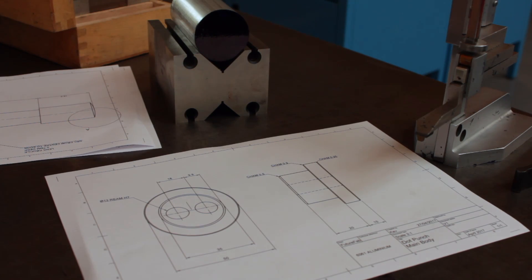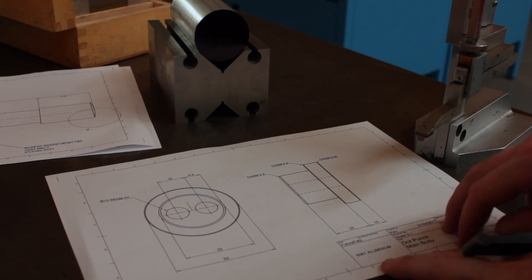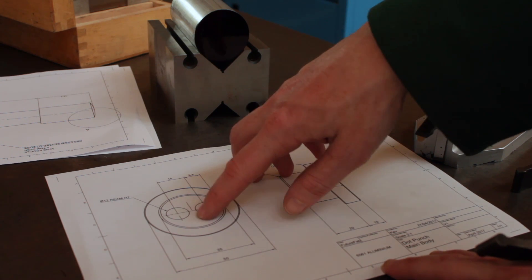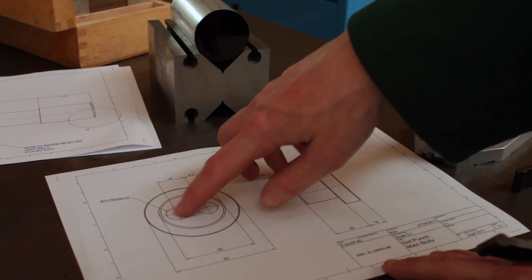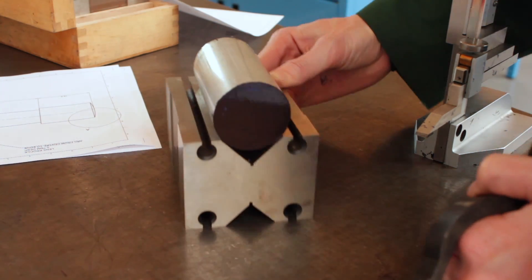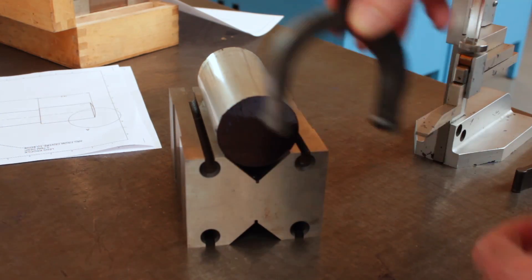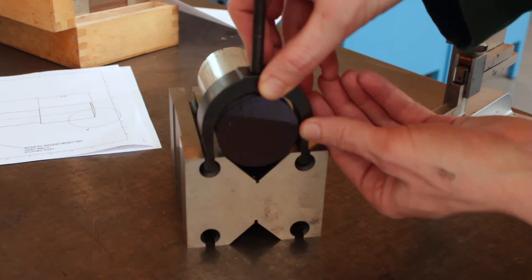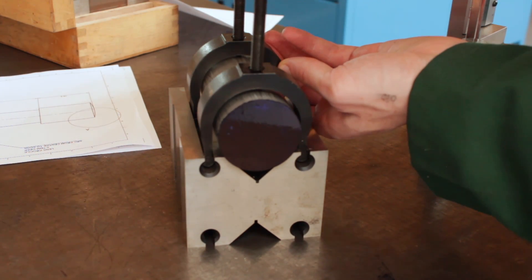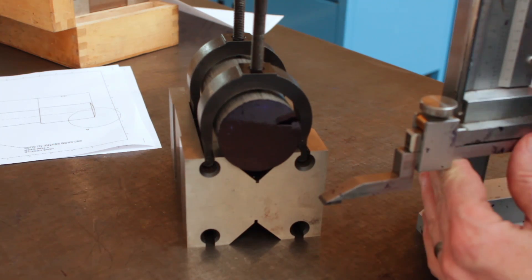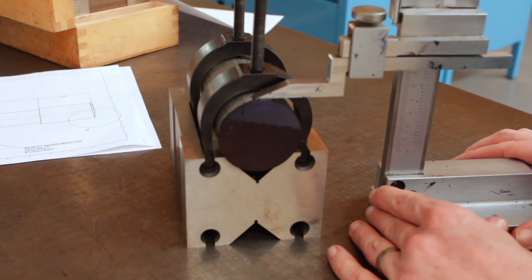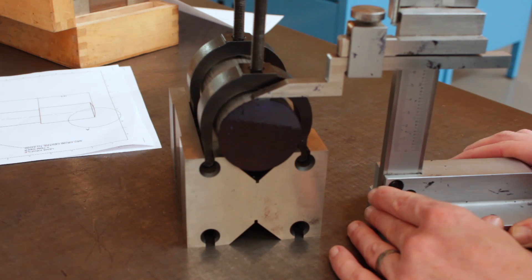Before we machine the full profile of the body we're going to mark out a center line using a v-block and a vernier height gauge. Once we've found that center line we're going to offset by 8mm either side to mark the position of the two holes. We're going to clamp it in place, and this is two inch bar so if we put the vernier height gauge on top of the bar then offset down by one full inch, we'll be able to find the exact center point.